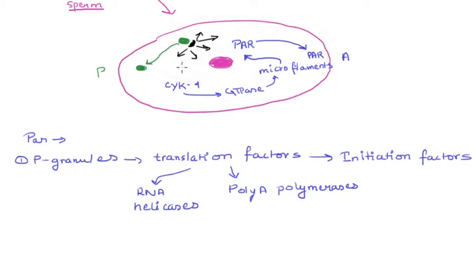After the fertilization occurs, that is, the egg nucleus combines with the sperm pronucleus, these P granules move towards the posterior side. This has an importance. Why do the P granules move towards the posterior side?